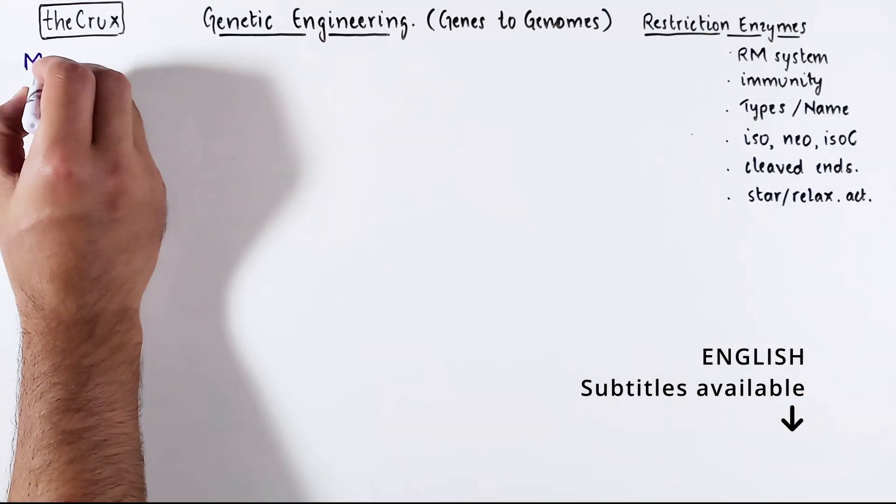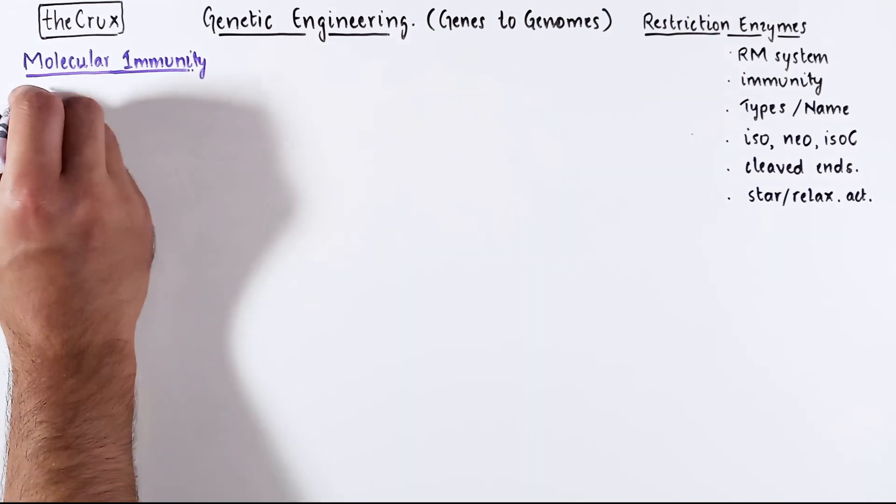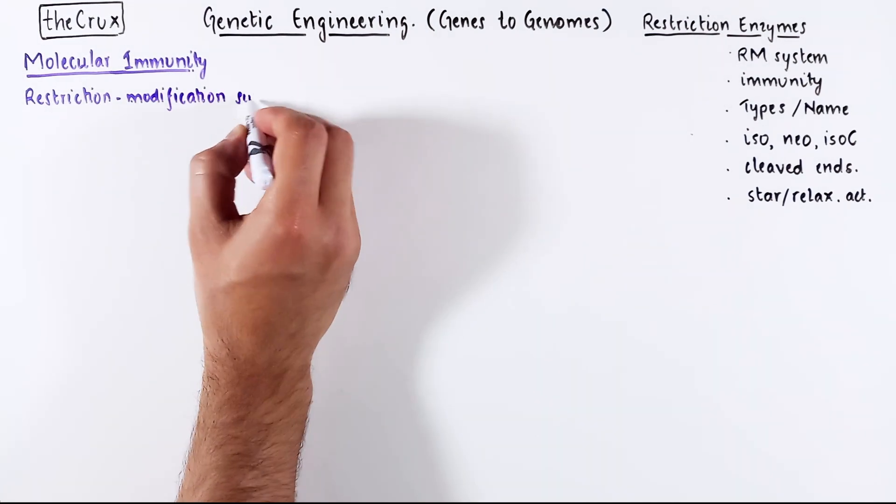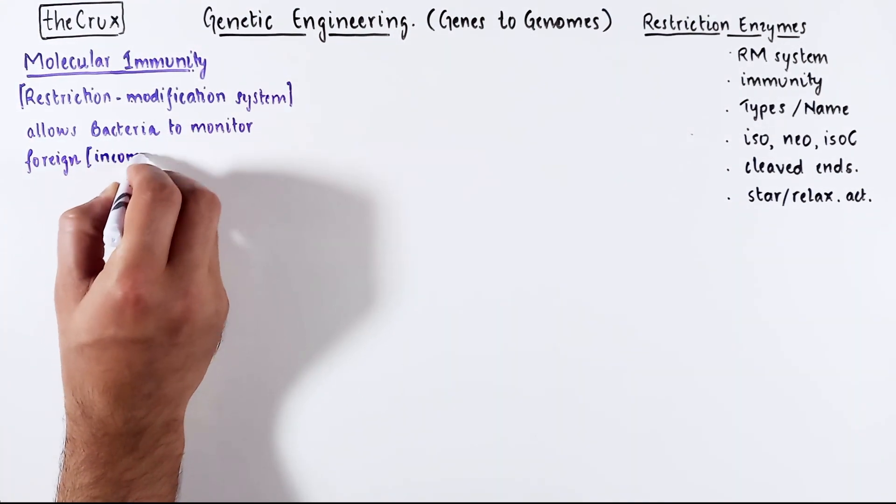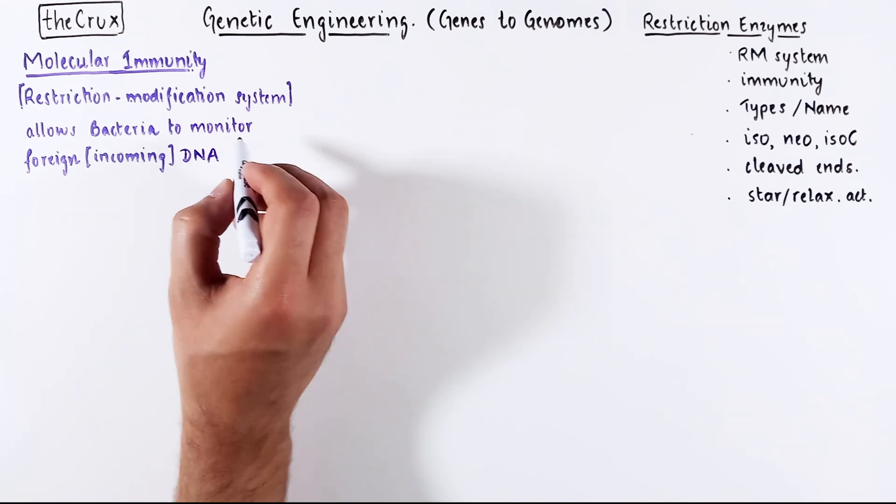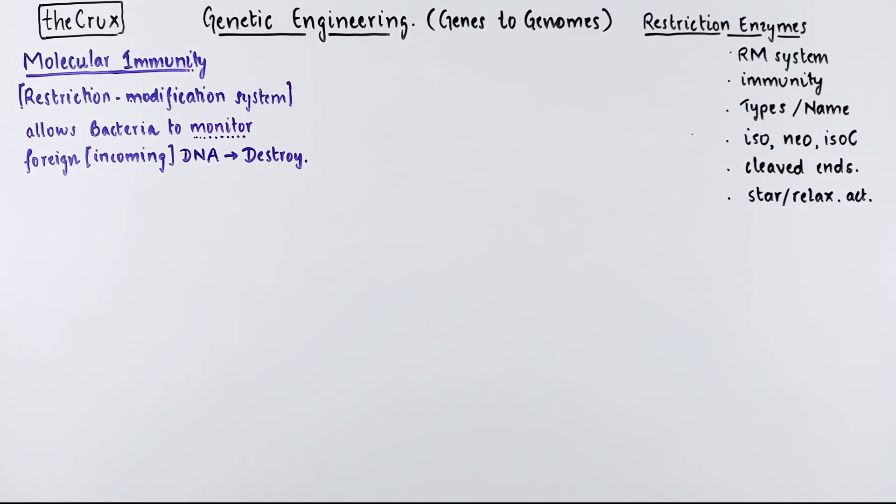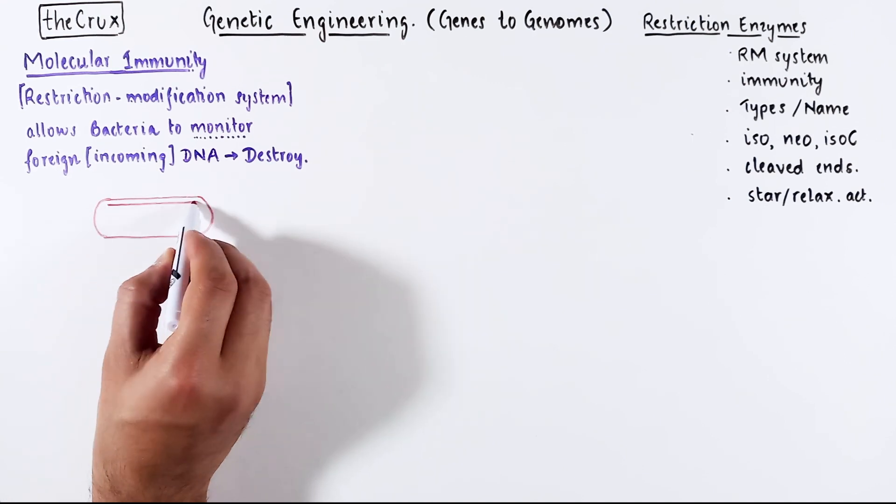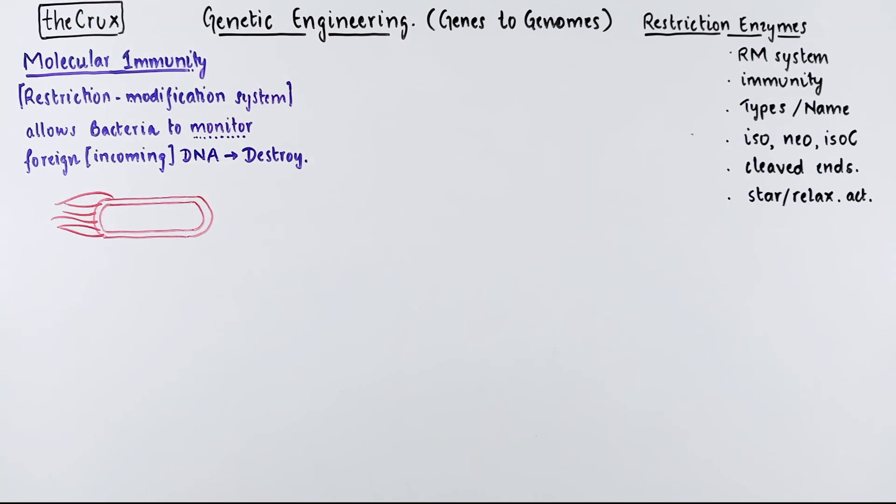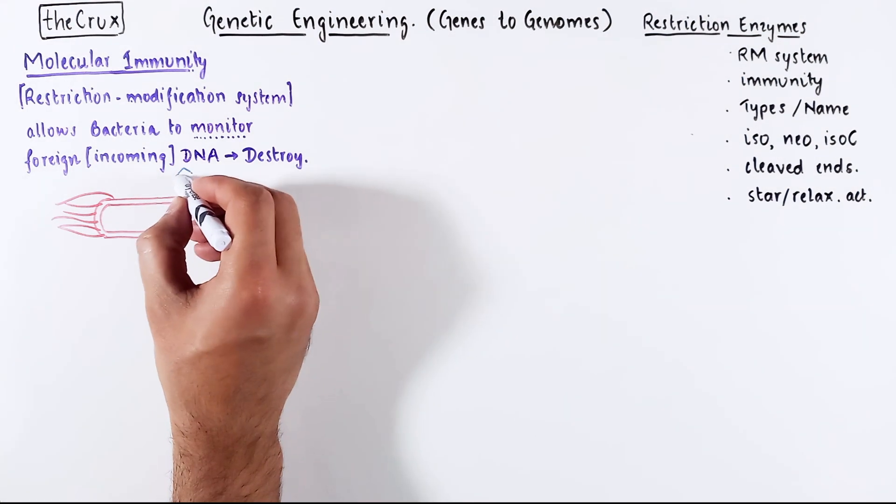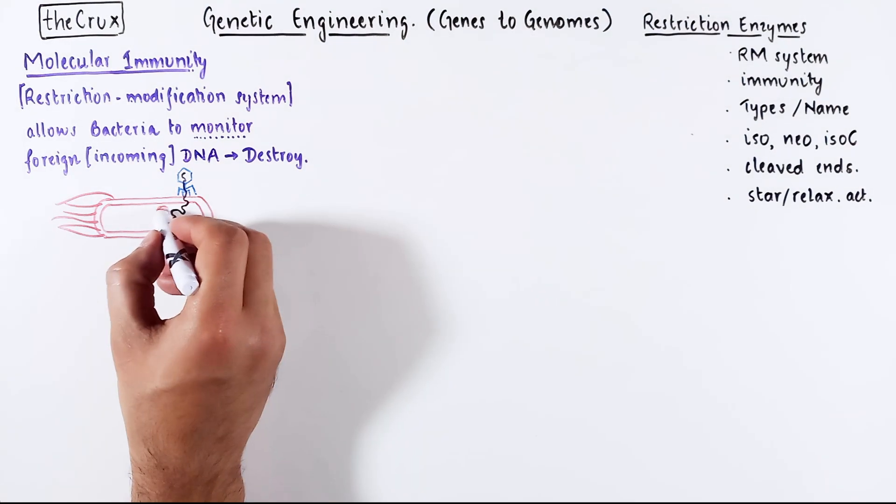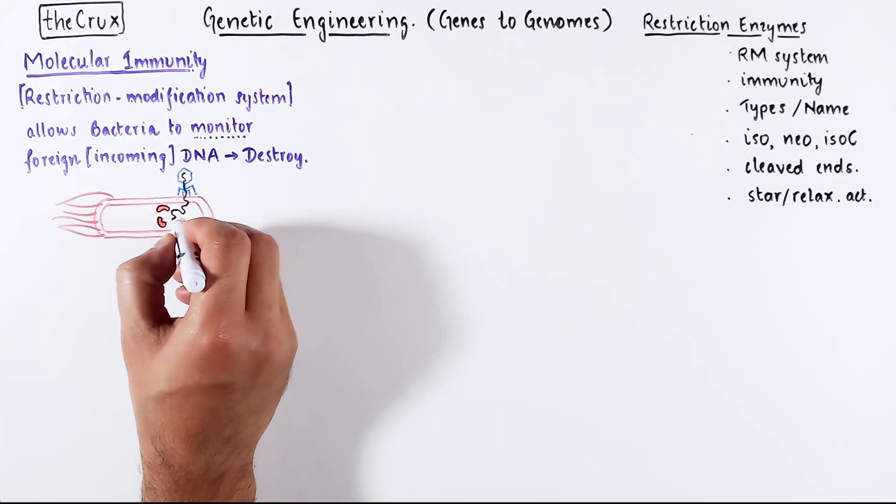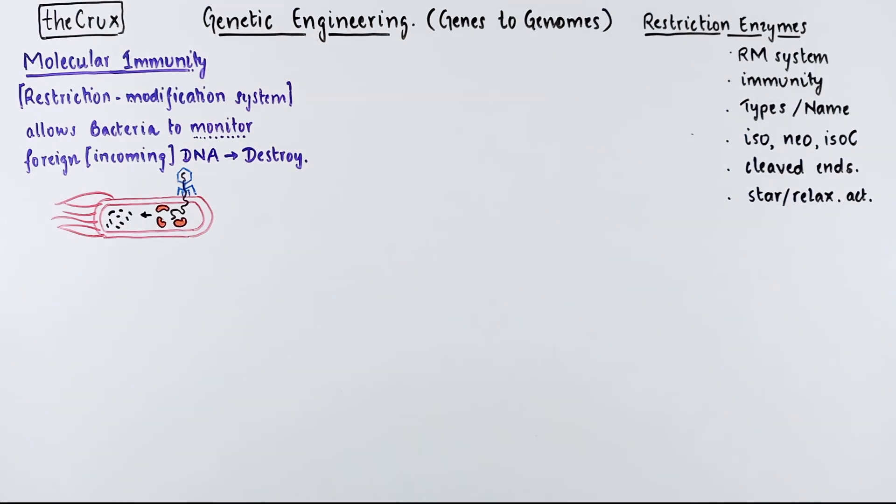Our journey begins with the discovery of molecular immunity in bacteria. The restriction modification system allows bacteria to monitor any incoming DNA, and the monitoring and identification usually leads to the destruction of foreign DNA. Bacteria don't usually get the same type of cough or flu like we do, but viruses love humans and bacteria equally. There is a certain class of virus called bacteriophages, which infect bacteria by injecting DNA into the bacteria. To evade this infection, bacteria have evolved a special system that detects and destroys this foreign DNA upon recognition.